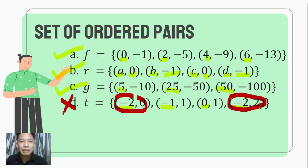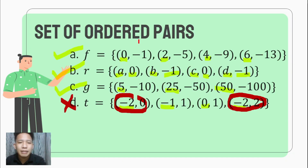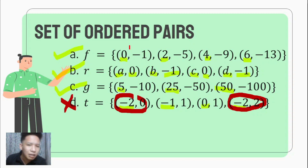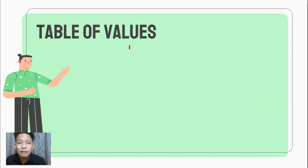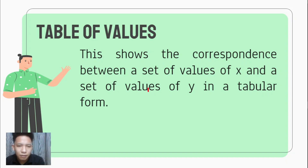If we have a set of ordered pairs, then we can put it in a tabular form called a table of values. A table of values shows the correspondence between the set of values of X and the set of values of Y in a tabular form.